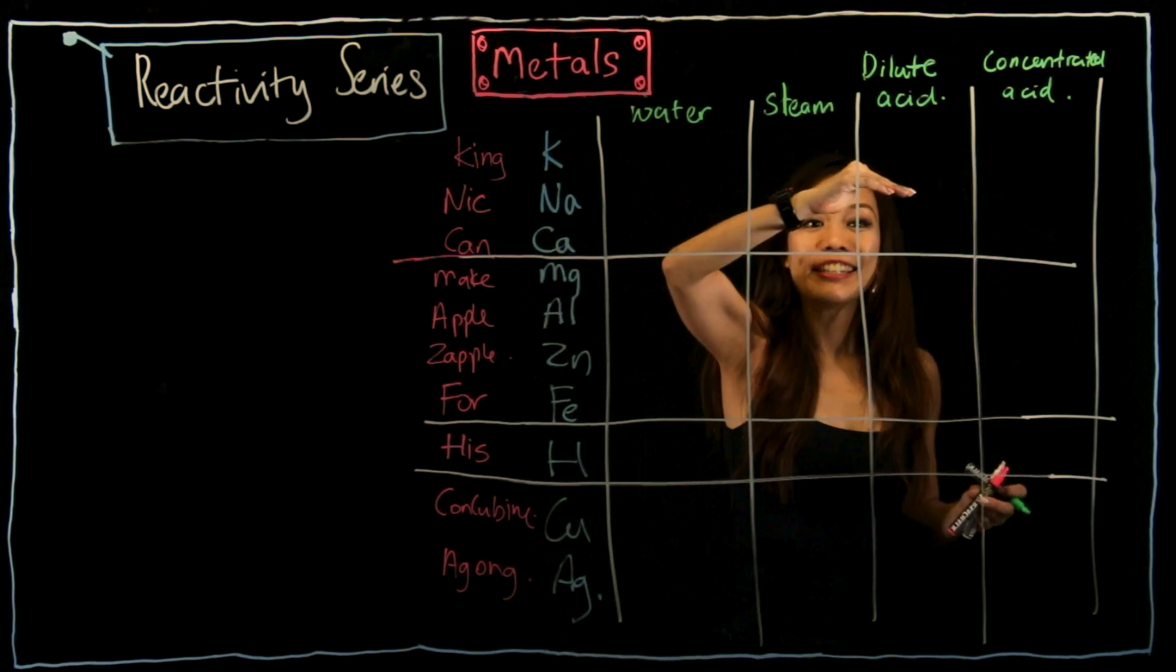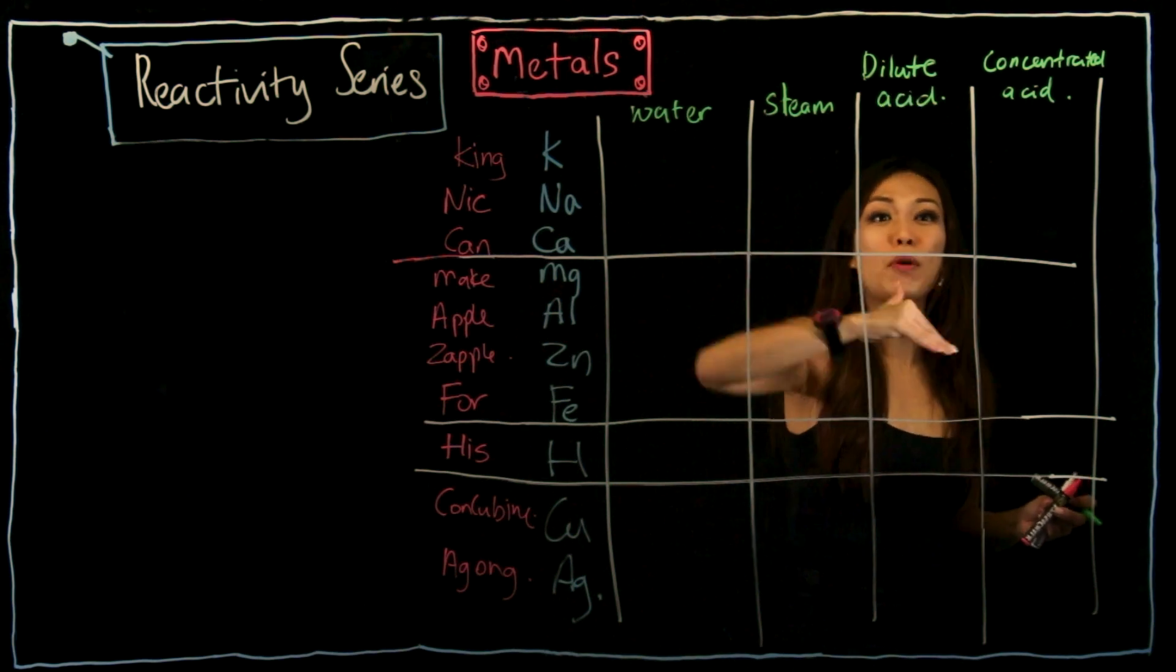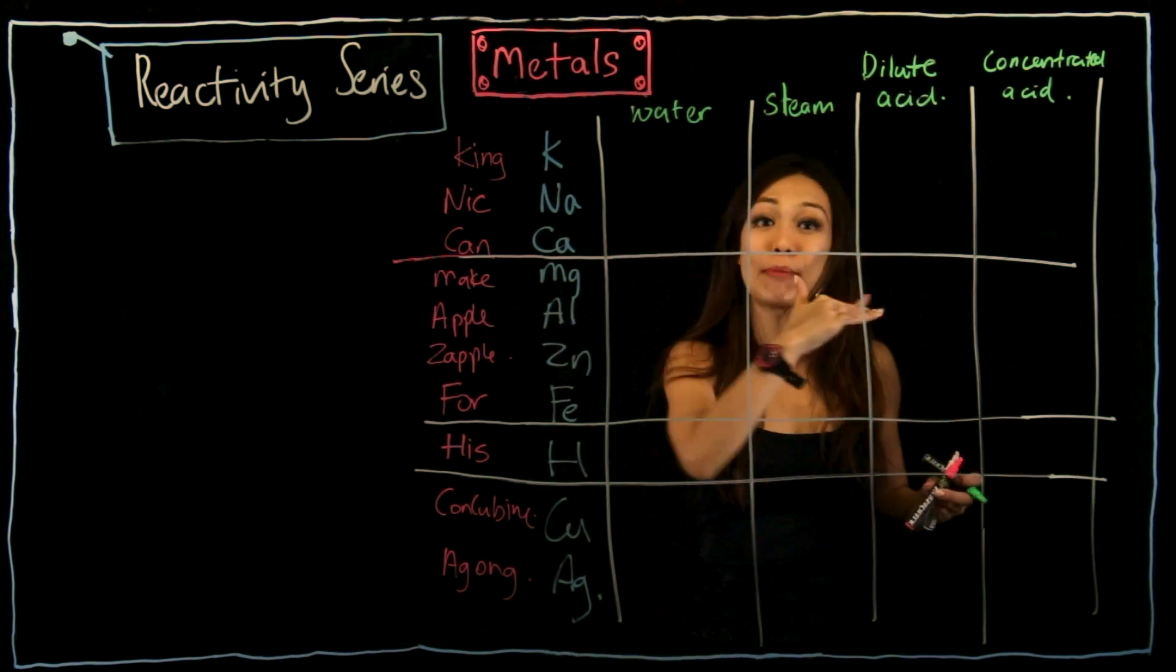Then we have dilute acid. Then after dilute acid, we have the more concentrated acid because dilute acid is the mild acid.